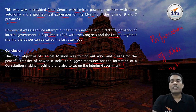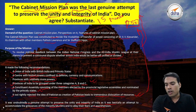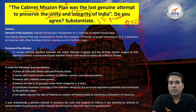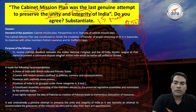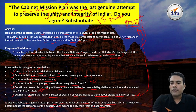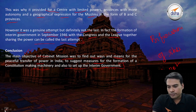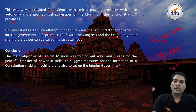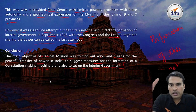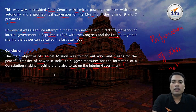This was the main purpose of the Cabinet Mission Plan. The question was whether the Cabinet Mission Plan was the last genuine attempt to preserve the unity and integrity of India. We explained the purpose of the mission, established that unity and integrity were to be maintained, explained the features of the plan where Pakistan was not to be separated, and showed the features advocated for unity and integrity rather than separation.